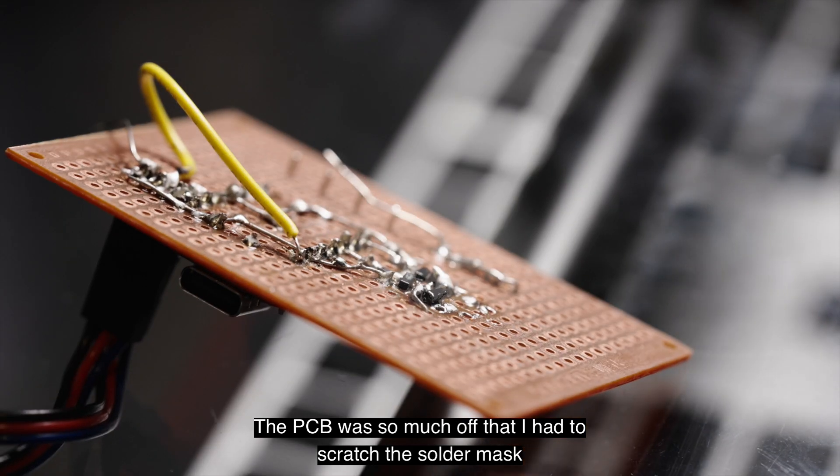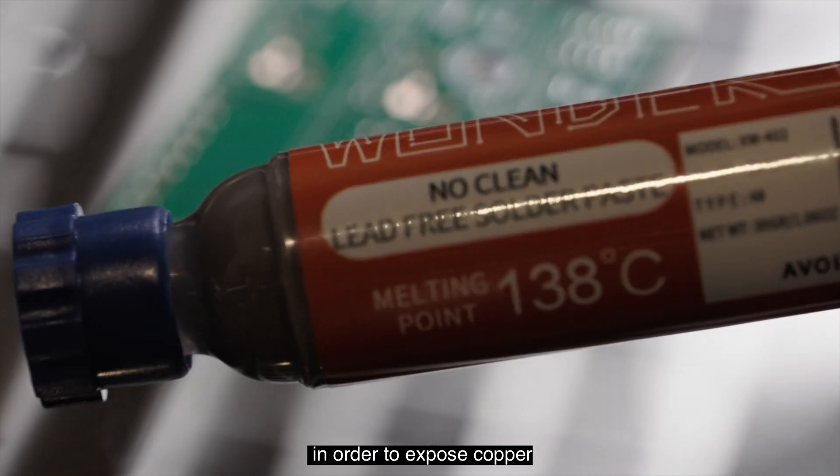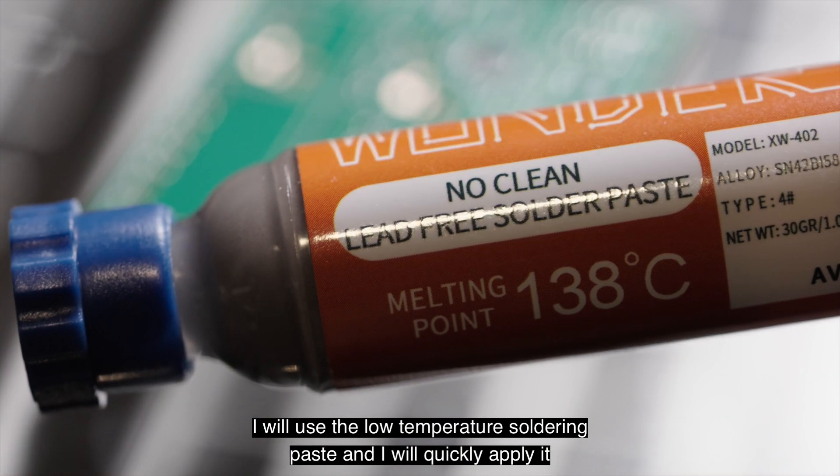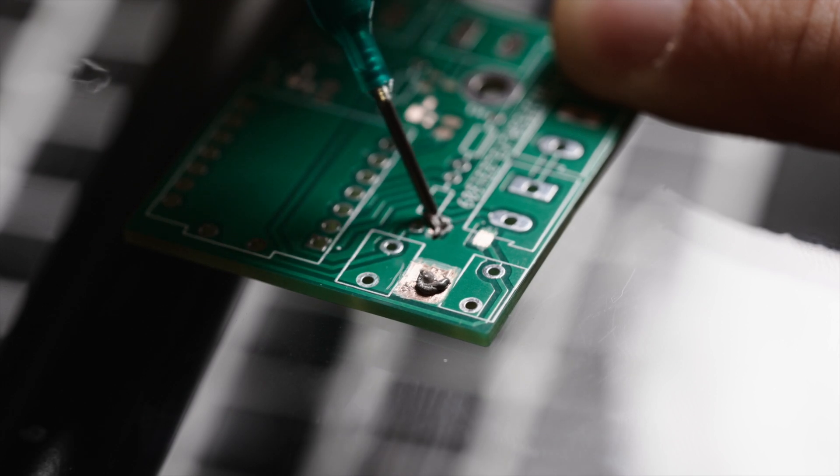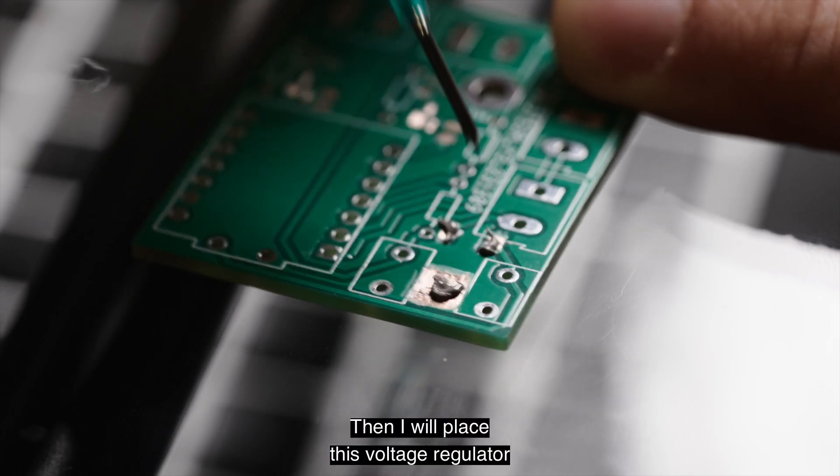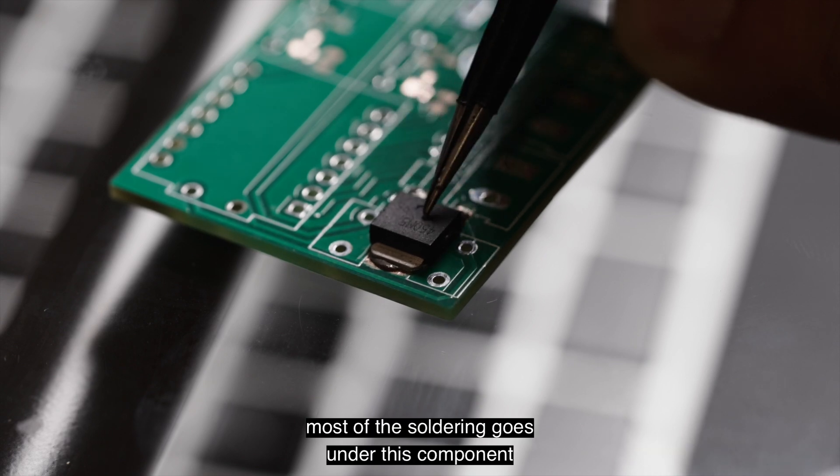The PCB was so much off that I had to scratch the solder mask in order to expose copper. I will use the low temperature soldering paste and I will quickly apply it. Then I will place this voltage regulator. As you can see, most of the soldering goes under this component.